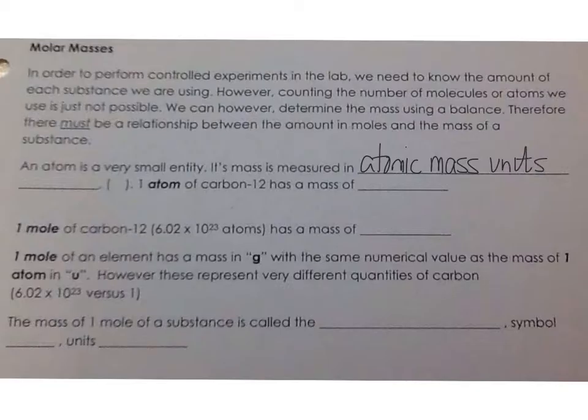Its mass is measured in atomic mass units. Bless you. Atomic mass units. We can write AMU for short, but its unit is a U. It's a U, the letter U. One atom of carbon-12 has a mass of 12.00 units.